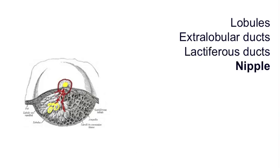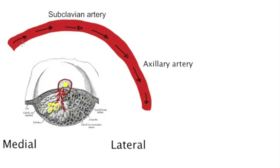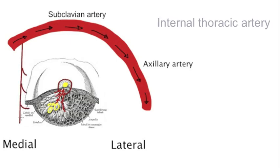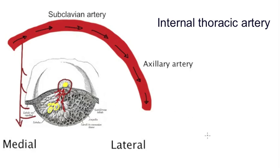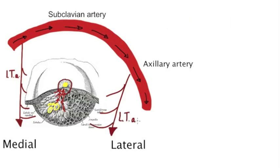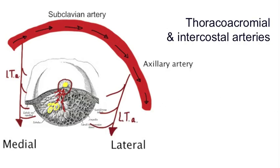The blood supply of the breast comes from two main sources. The medial breast is supplied by the internal thoracic artery, and the lateral thoracic artery, a branch of the axillary artery. There are also branches from the thoracoacromial artery and the intercostal arteries that supply the breast.